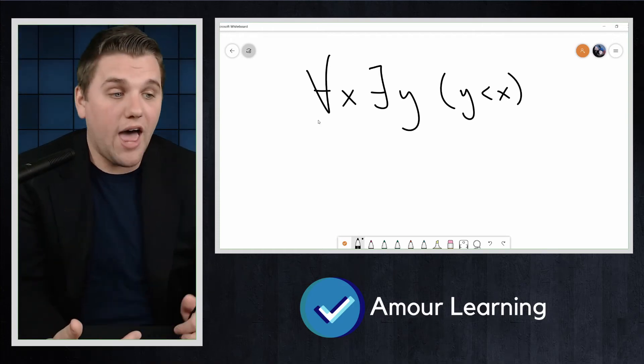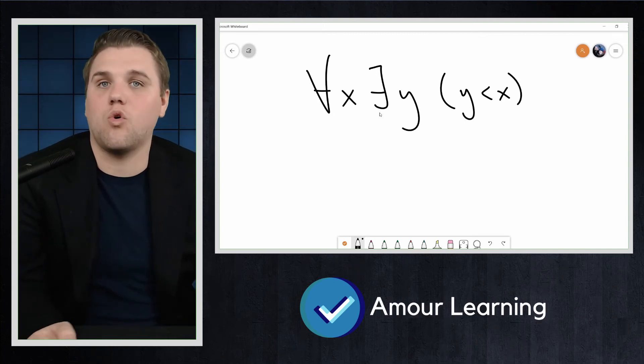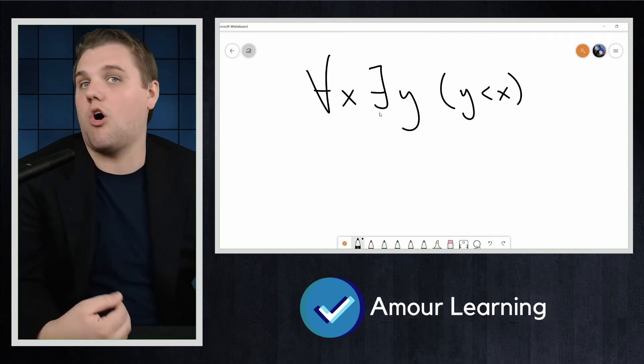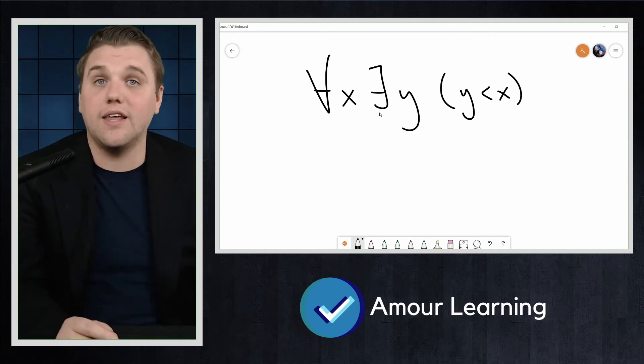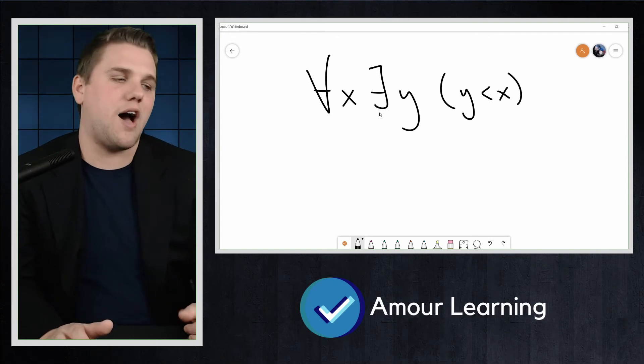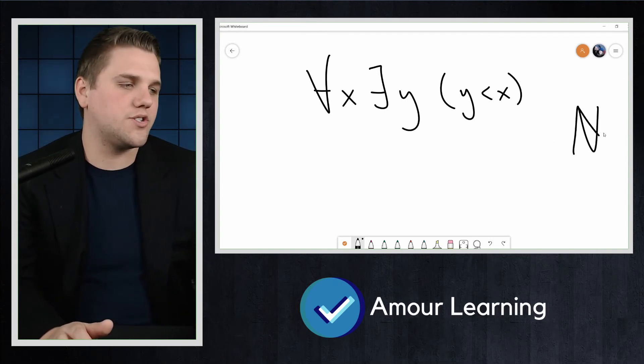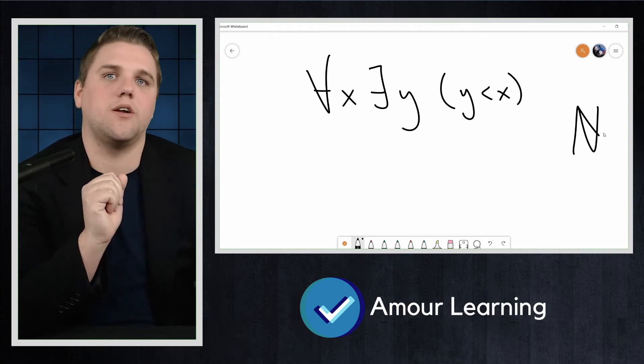When we say for all X, do we mean all positive integers or all real numbers or all elements of some other set? But usually this information is implied, especially in discrete mathematics, we almost always quantify over the natural numbers, 0, 1, 2, 3, and so on. So let's take that for our domain of discourse here.